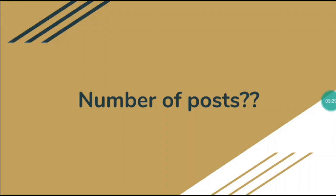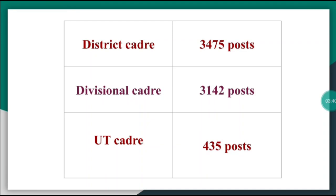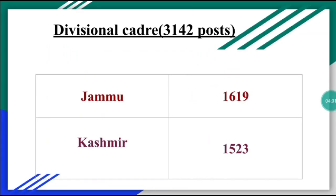JKSSB has referred 7,052 posts in total. These 7,052 posts are further divided into district cadres, divisional cadres, and UT cadres. District cadres have 3,475 posts, divisional cadres have 3,142 posts, and UT cadres have 435 posts. The divisional cadres of 3,142 posts are further divided between Jammu division with 1,619 posts and Kashmir division with 1,523 posts.